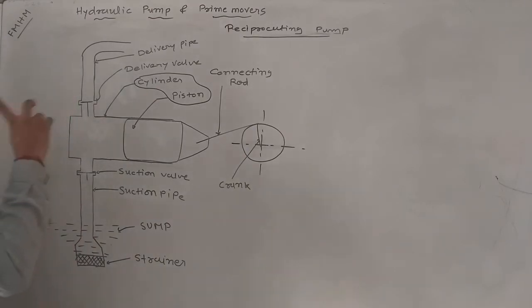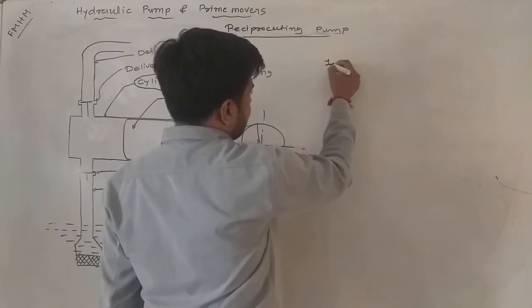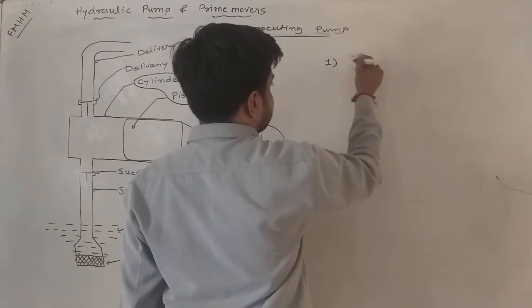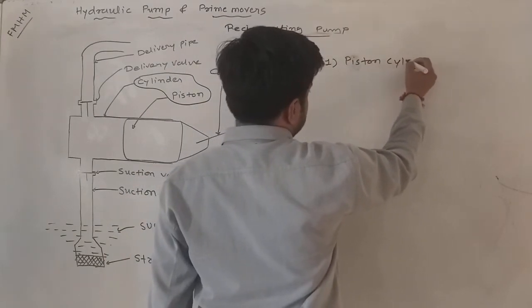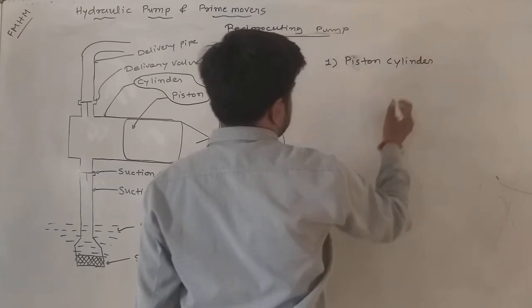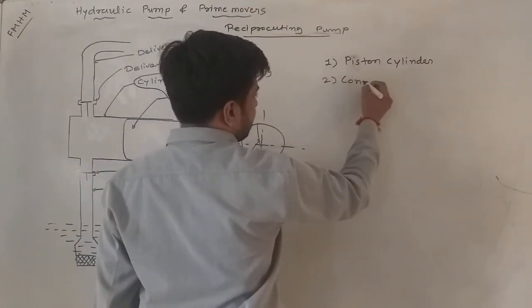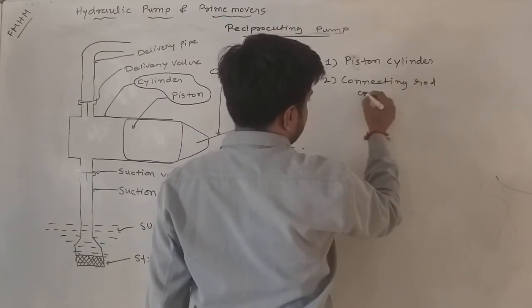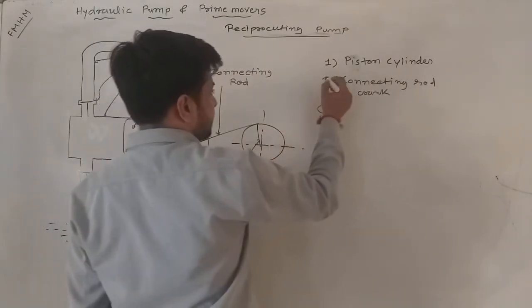In the construction of the reciprocating pump, the main component is the piston cylinder assembly, which drives the pumping action.